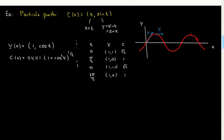The y component is minus 1 at t=π, so it's downwards while the x component remains plus 1. This emphasizes that the speed is now varying — this vector is longer than the previous one. The vectors go up and down, and while you could get their general directions from the tangent to the curve, now you have the actual lengths as well.